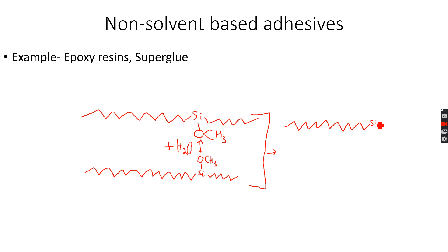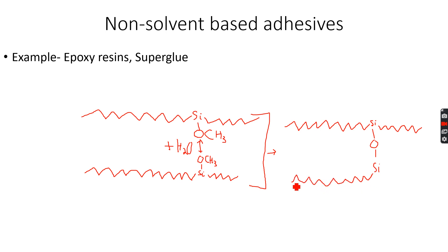After bond formation, we have a silicon with an O, connected to another silicon which was attached to the other polymer chain of the same compound. Because they are the same polymer chains, they form this bond. This is called a cross-link.